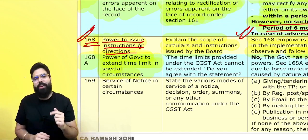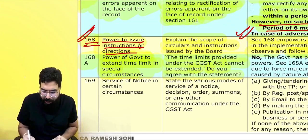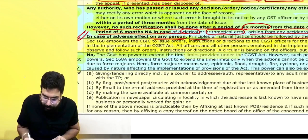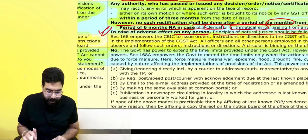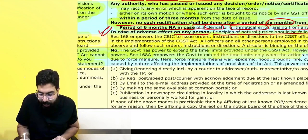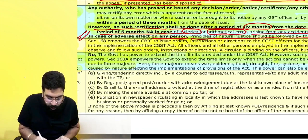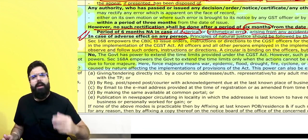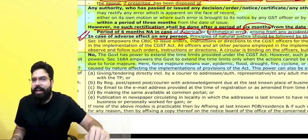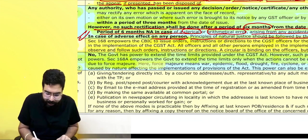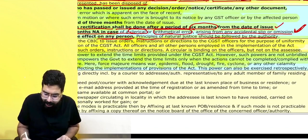The time limit provided under the GST Act cannot be extended — do you agree with this statement? No. The government has the power to extend time limits. However, this power is not unbridled. Section 168A empowers the government to extend the time limit only when the action cannot be completed due to force majeure — flood, natural disaster, pandemic, war, epidemic, drought, fire, cyclone or any other calamity caused by nature affecting implementation of the provisions of the act. The power can also be exercised retrospectively.